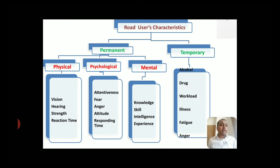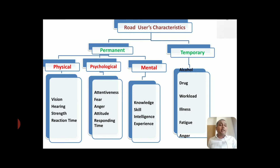The person is the road user — that is nothing but you and me. When talking about road users characteristics, you are talking about human behavior and human characteristics. These road users characteristics are categorized into two sections: permanent road users characteristics and temporary road users characteristics. Permanent means these are characteristics of a human being that are not going to change for a long period of time, or for the entire life of that particular road user.